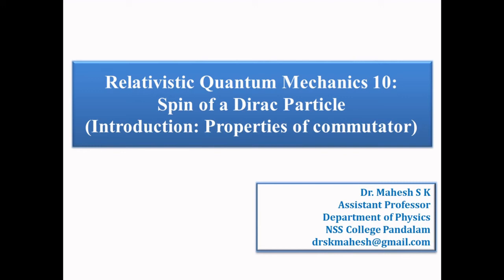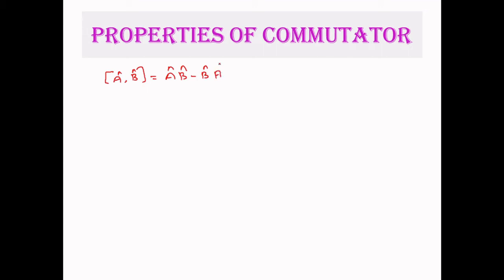Good morning. In the last class we discussed the idea of spin. Today we are going to discuss some of the basic properties of commutator brackets. You have calculated some of the commutator brackets while discussing the general formalism of quantum mechanics.